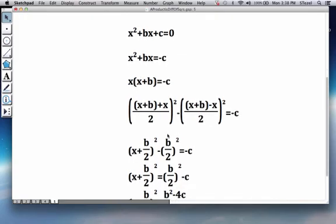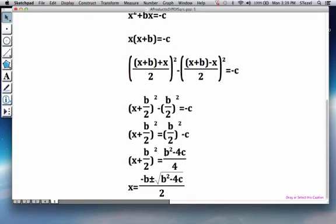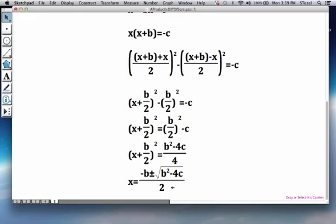As a next step throw the b over 2 squared onto the other side and when you simplify and equate the denominators you're going to start getting things that already look a lot like the discriminant. So you're going to get b squared minus 4c divided by 4 and now what we need to do is take the square root of both sides that will give a square root in front of the b squared minus 4c here put a plus or minus here and when you toss the b over 2 onto the other side you'll get the famous quadratic formula.